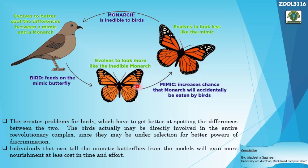However, this is disadvantageous for the monarch, because if a bird eats the mimic viceroy and finds it tasty, it might accidentally eat the monarch too, increasing the chance that monarch will accidentally be eaten. In response to this mimicry, the monarch evolves to look less like the mimic, making itself inedible to the birds again.